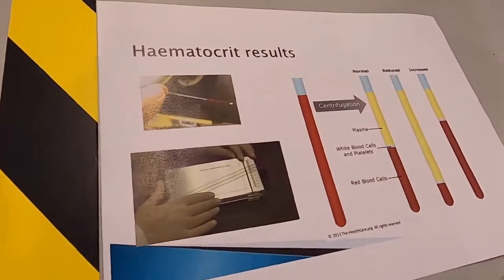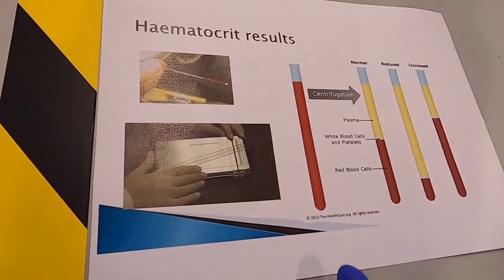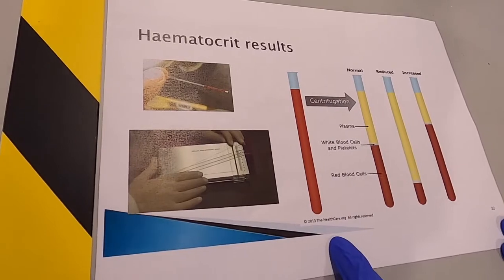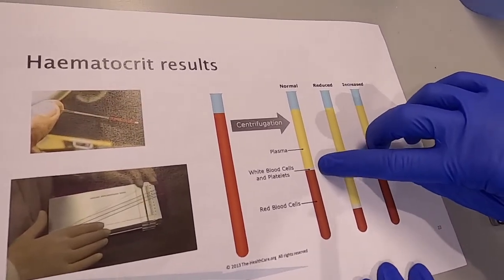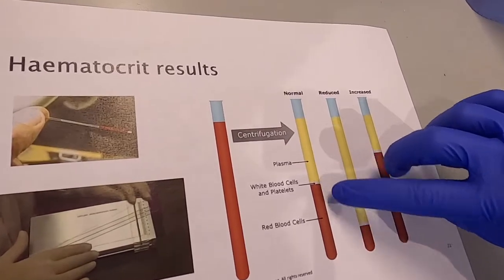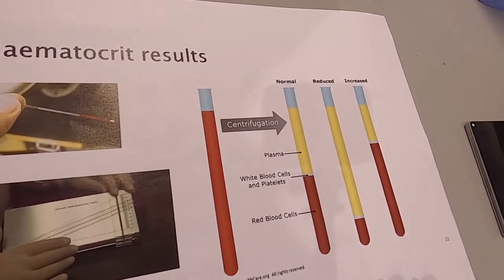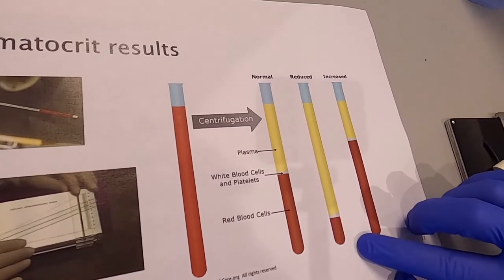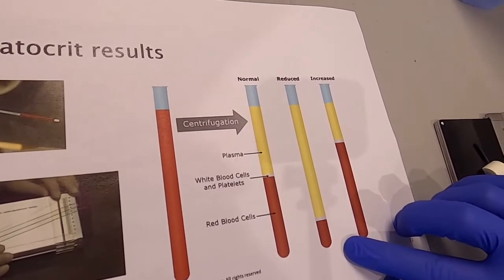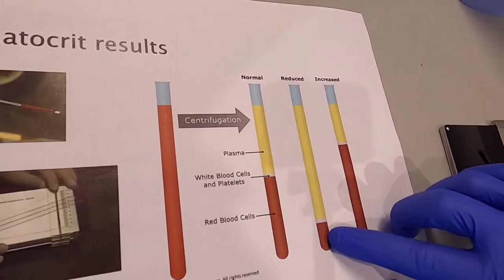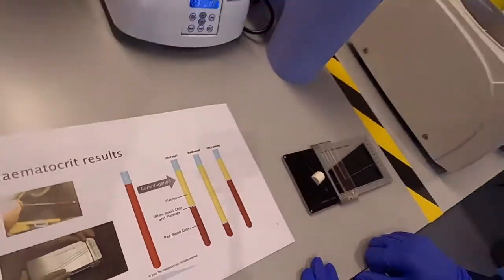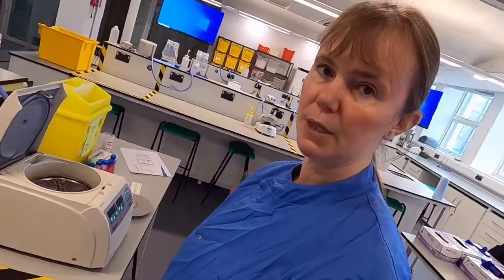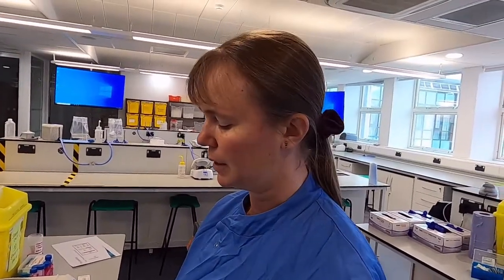This shows some varying hematocrit results. We've taken our whole blood sample, we've spun so that we have a plasma layer. Our white blood cells and platelets then sit as a very fine layer on top of our red blood cells. There are occasions when the hematocrit, the red blood cell layer, can be very reduced or could be increased. And that's a challenge for you to go and find different situations where that might be the case.